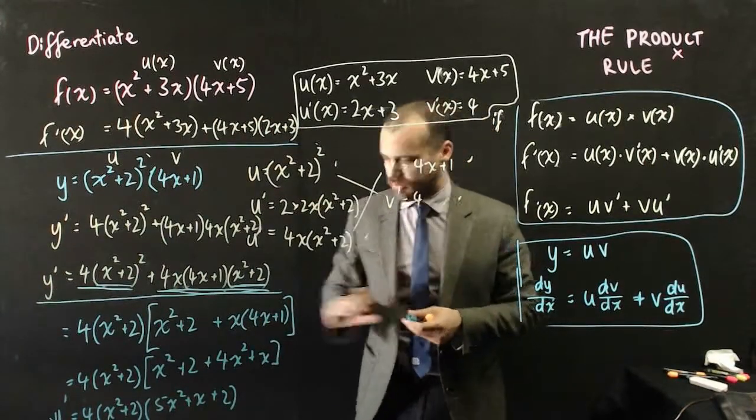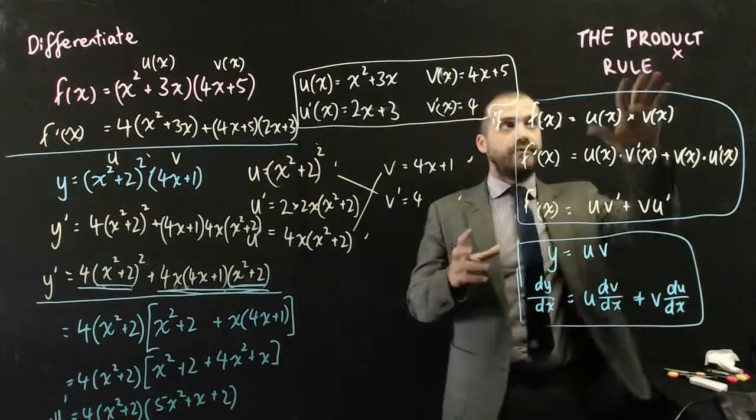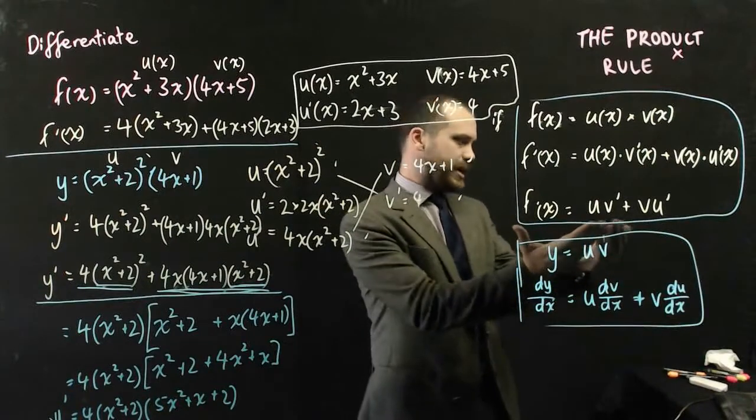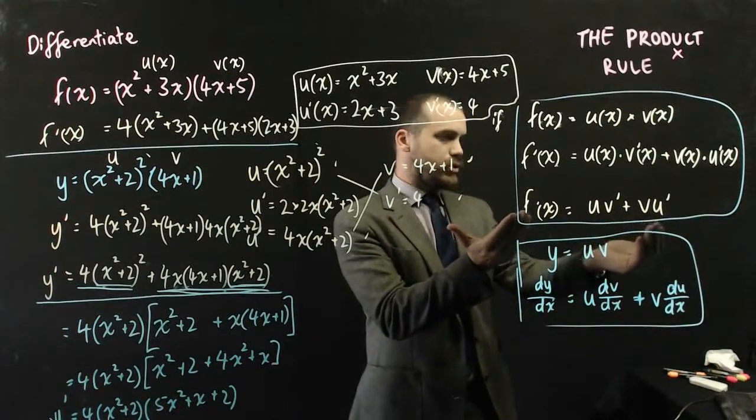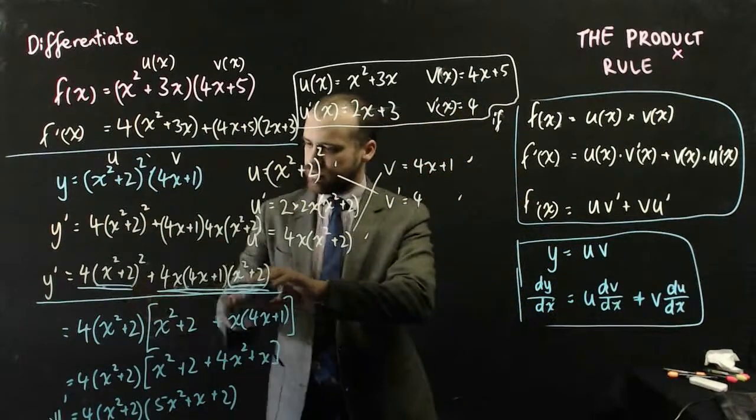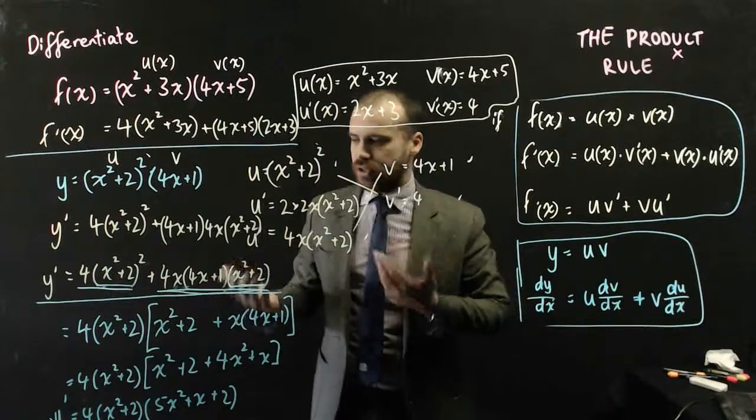Starting to fall off the page there. Hopefully you can see that. So a couple of key ideas here. If there is a function times a function, you use your product rule, which is probably easier stated as being uv' + vu'. And then once you've found the derivative, you can use it for a bunch of stuff, but if you're just being asked to find the derivative, you should probably neaten it up by doing some of that advanced factorizing down the bottom.